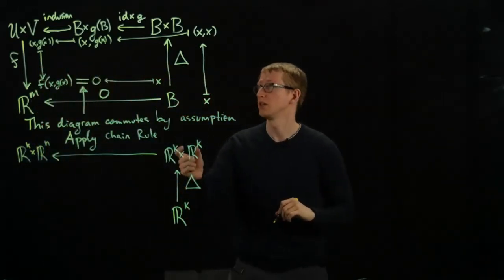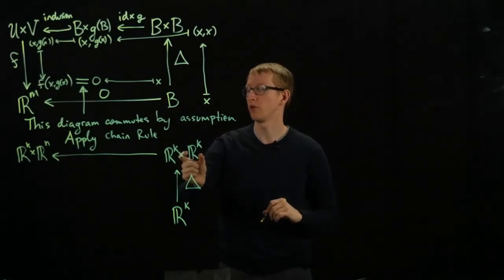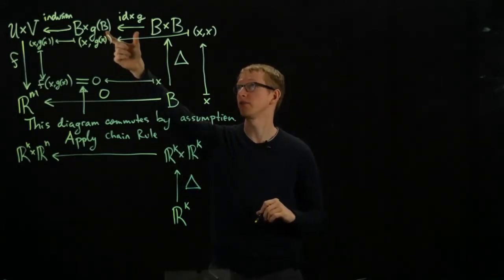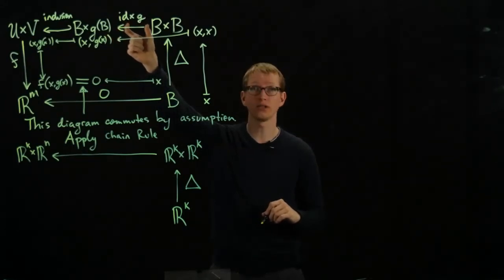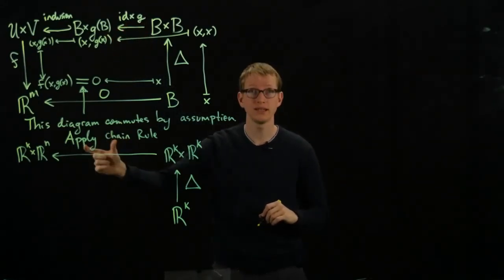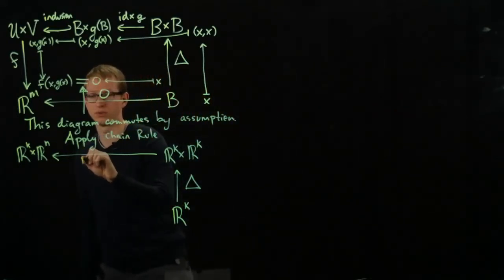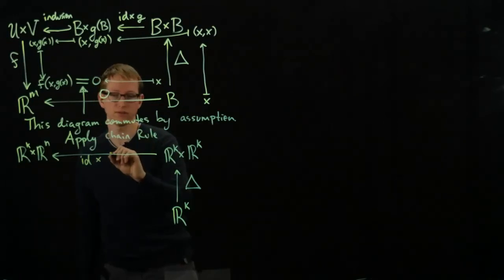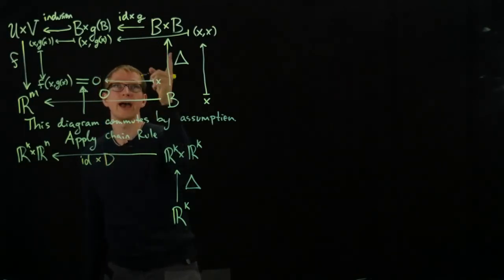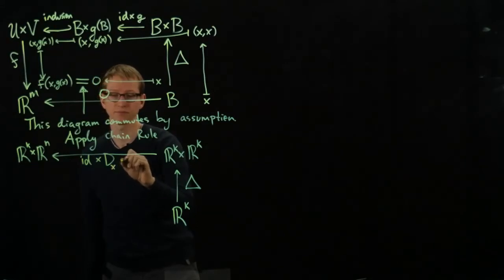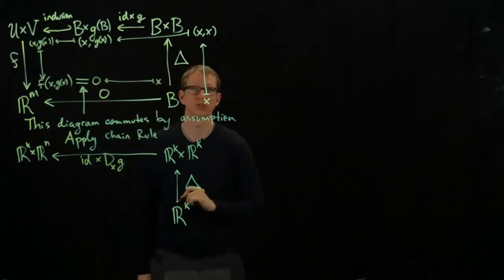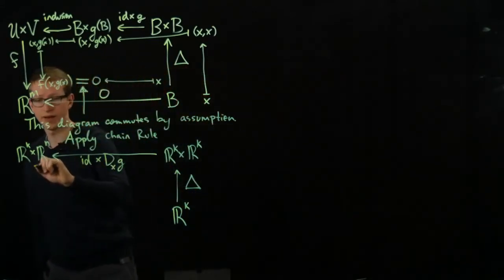And the reason is because G is defined here, so all we have to do is apply the differential to G. And if we apply the differential to the identity cross G, that's just going to be the identity direct sum differential applied to G. So this is identity cross, or you can also think of this as a direct sum, as D at the point X applied to G.